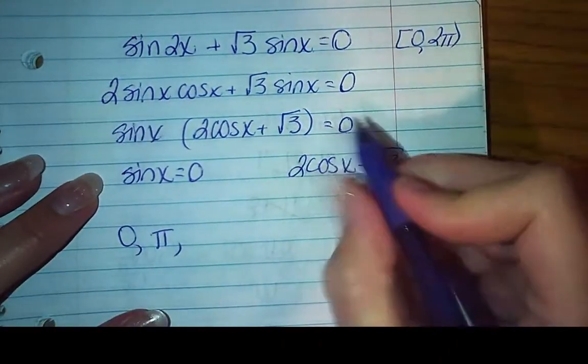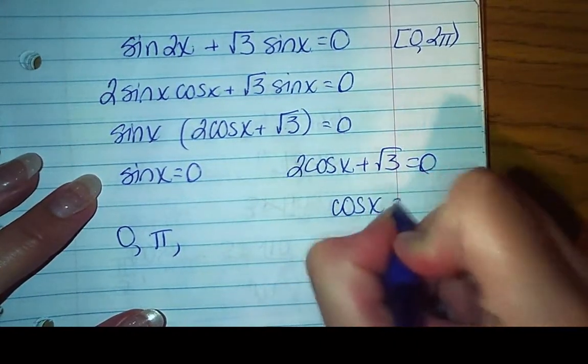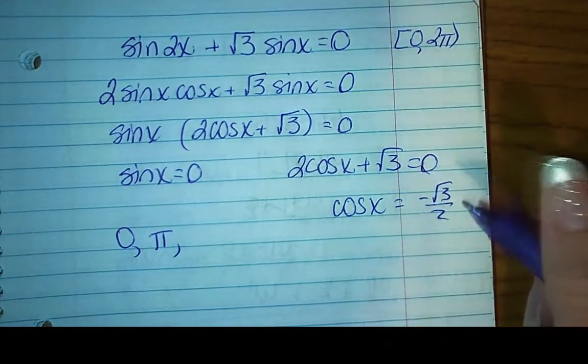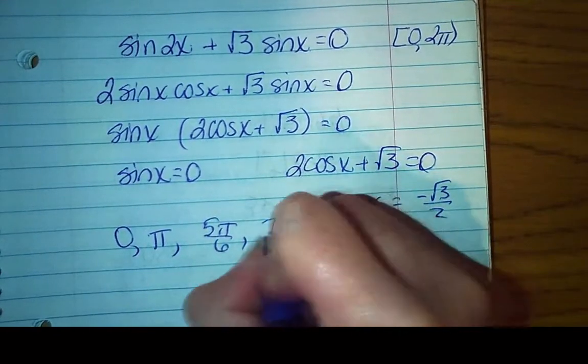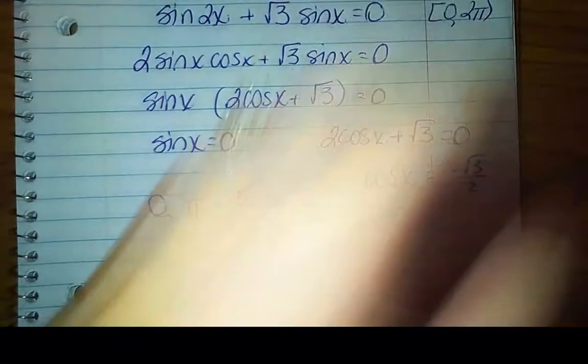And then we've got to solve this one. So I'm going to subtract √3 and divide by 2. So where does cosine equal a negative √3/2? That's going to be at 5π/6 and at 7π/6. So again, check your work. Make sure it all works out.